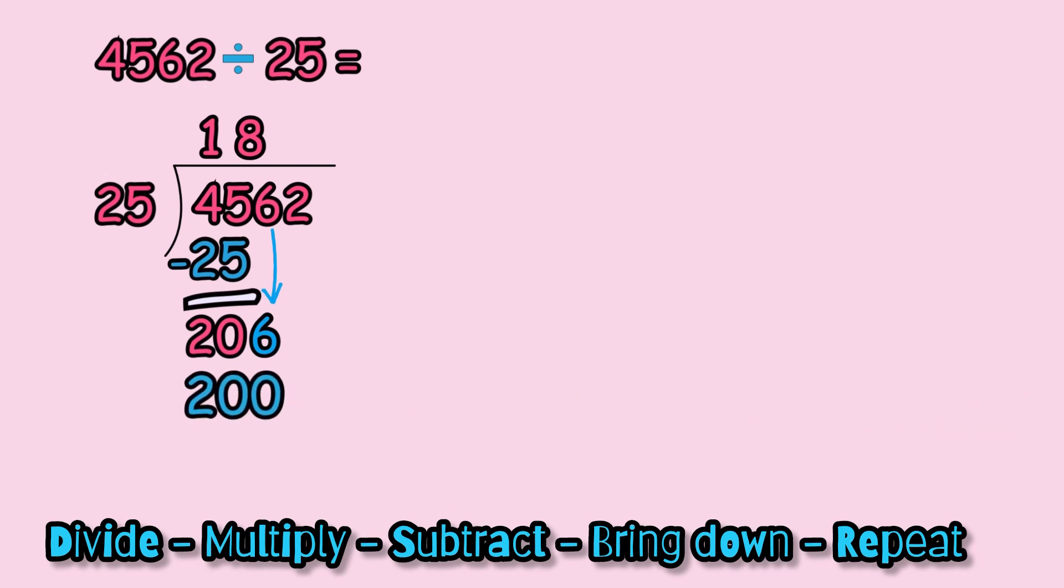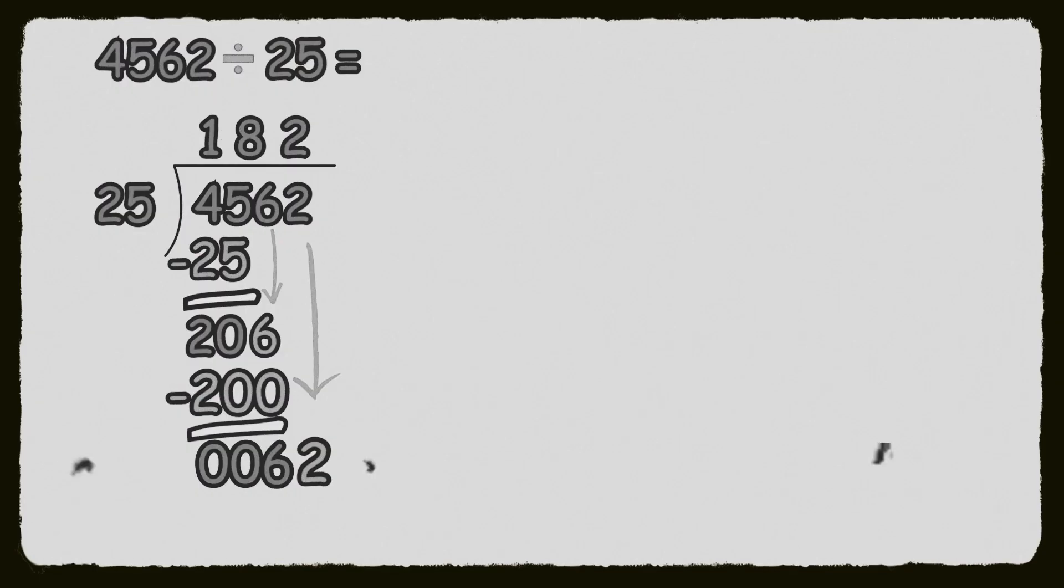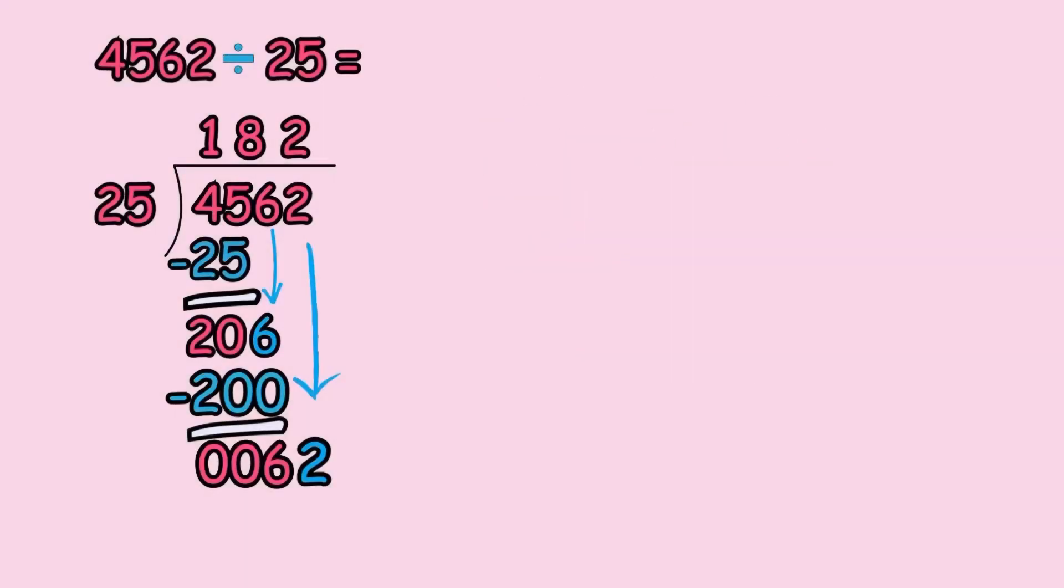So then we're going to multiply: 8 times 5 equals 40, then 8 times 2 equals 16 plus 4 equals 20, so 200. Then we're going to subtract, which is the next step: 6 minus 0 is 6, then 0 and also 0. Then we're going to bring down the number 2. Don't stress out with the steps because as I told you at the beginning, they repeat again and again. That means that the more you practice, the better you will be.